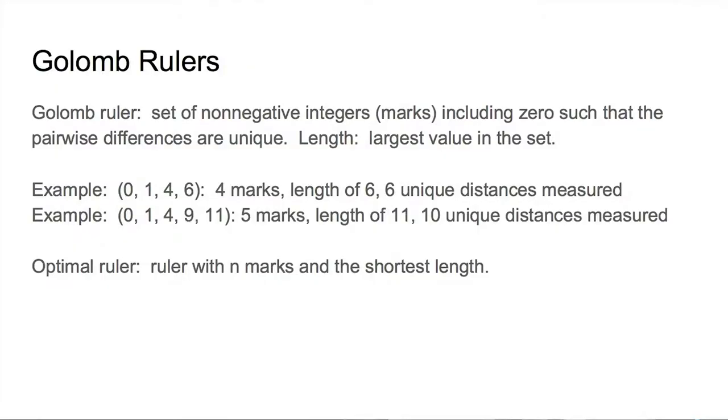The next example, I've got five marks with values from zero to eleven, and there are ten unique distances there. Now there's one distance missing, because if there are ten distances but the length is eleven, there must be some value that I can't measure. So this is different from sparse rulers — these are just Golomb rulers.